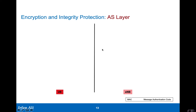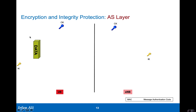Let's look at encryption and integrity protection at the radio level, or at the access stratum layer, so between the UE and the eNodeB. Here again, we have the ciphering key and the integrity protection key for the RRC messages. Let's take an RRC message, which we show here as data.